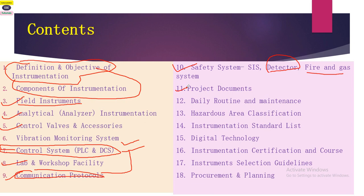The eleventh point is very important for project documentation. When installing a new plant or unit, you will require project documents such as cable schedules, panel schedules, JB schedules, instrumentation hookup diagrams, instrument databases, configuration diagrams, and data sheets. We will also cover other documents related to this area.